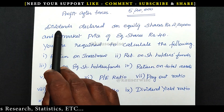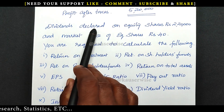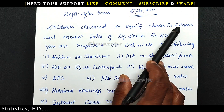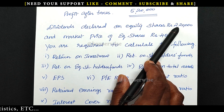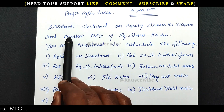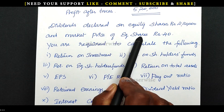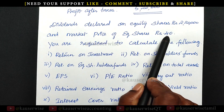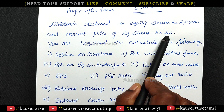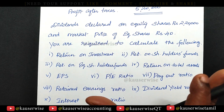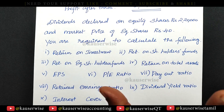Now see the adjustments: dividend declared on equity shares 2,20,000 and market price of equity shares rupees 40. These are the informations given in the problem.